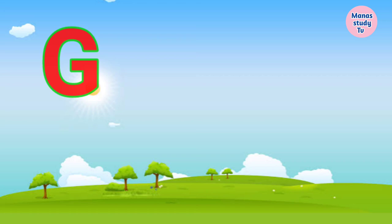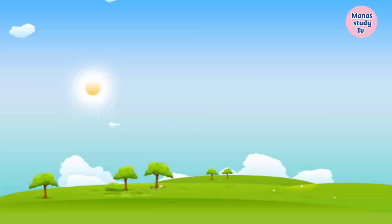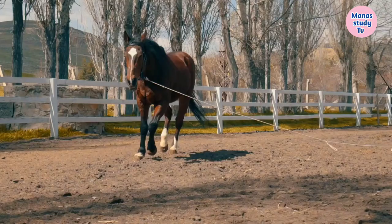G. G for Goat. Goat means Bakri. H. H for Horse. Horse means Ghoda.